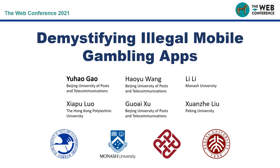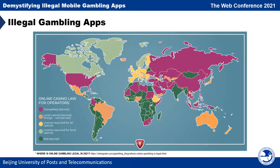Our work focuses on demystifying illegal mobile gambling apps. This figure shows the online casino law for operators. As you can see, only a few countries are green, which means gambling is not banned. In most other countries, gambling is under strict regulations, even completely banned in many countries.